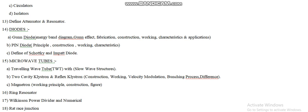Moving on, the PIN diode: we have to discuss the principle, construction, working, and characteristics of the PIN diode. The next question is to define the Schottky diode and the IMPATT diode. This is a very short type question in the two-mark category where the examiner asks only for the definition of the IMPATT diode and Schottky diode.